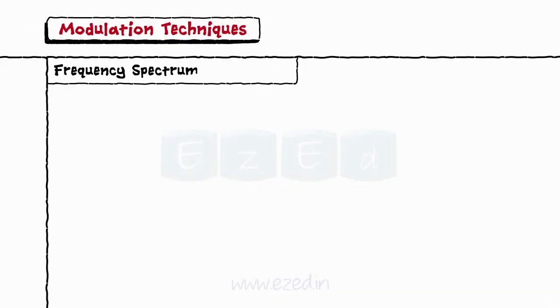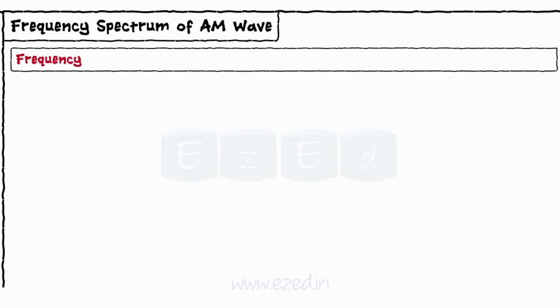Now let us see the frequency spectrum of the AM wave. Frequency spectrum is a graph of amplitude on y-axis and frequency on x-axis.